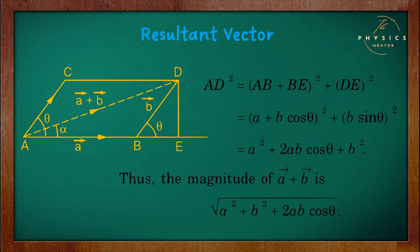Consider the parallelogram ABDC obtained by using vectors A and B as shown in the figure, where theta is the angle between vector A and vector B. The resultant vector is given by AD. DE is a perpendicular drawn from point D. By using the Pythagorean theorem, we can write AD² equals AE² plus DE².